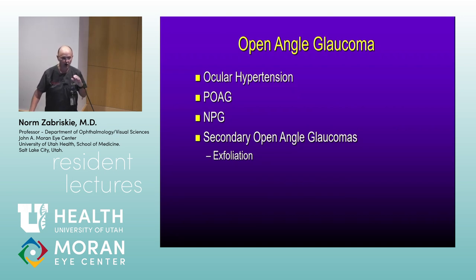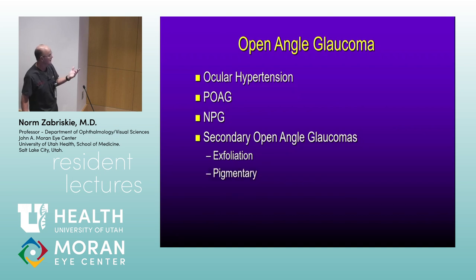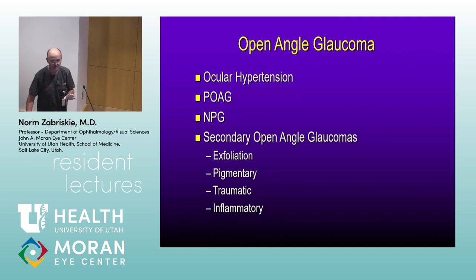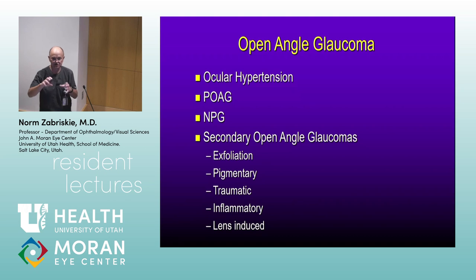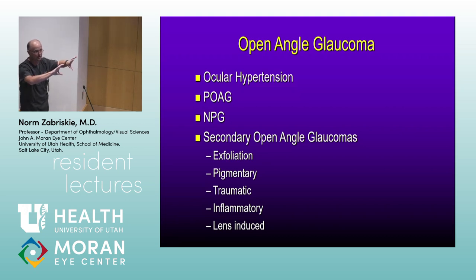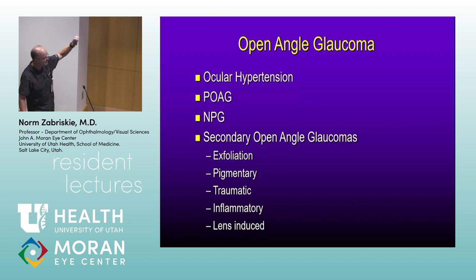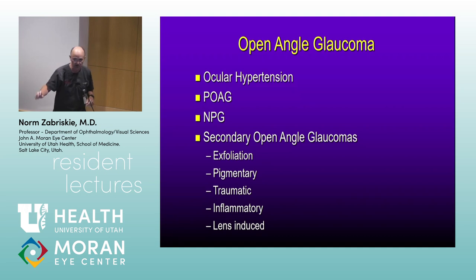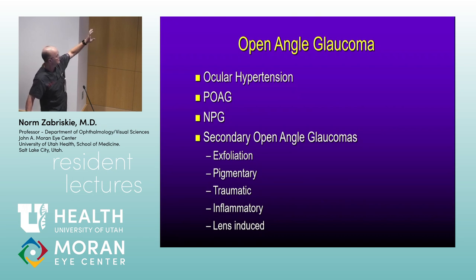Exfoliation is certainly number one among secondary open angle glaucomas. There's also pigmentary glaucoma — probably the second most important. Then there are others: traumatic, inflammatory — most inflammatory glaucomas are open angle — and lens-induced types like phacolytic, as opposed to phacomorphic which is more of a closed angle process. These form a diverse group with different pathology and clinical signs, and they'll make up most of what you do in comprehensive ophthalmology or as a glaucoma specialist.